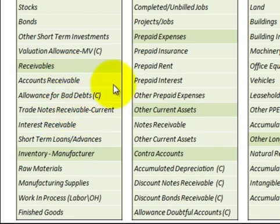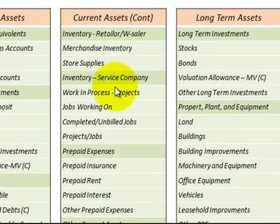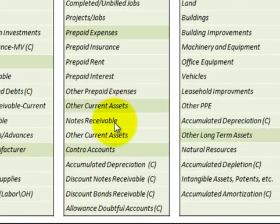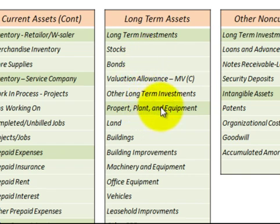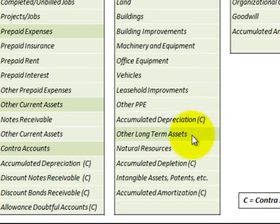Moving over to current assets continued, we've got the inventories and receivables. You can make a copy of these for your reference. Moving on to long-term assets, you can see the headings and the sub-assets underneath. Notice the little 'C' at the end of some items — that means it's a contra account, and wherever there are contra accounts I've got those listed.